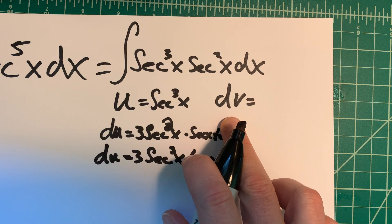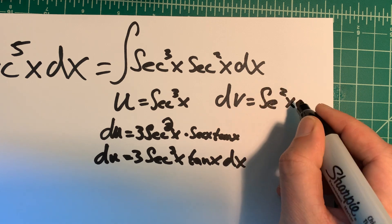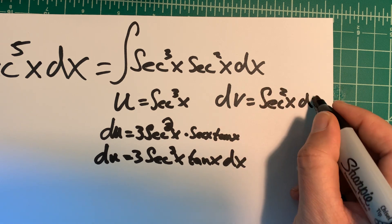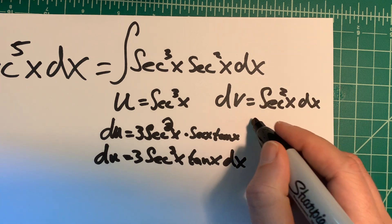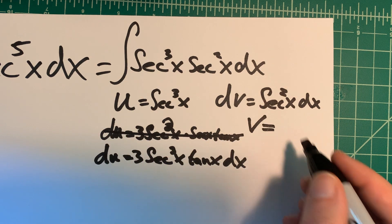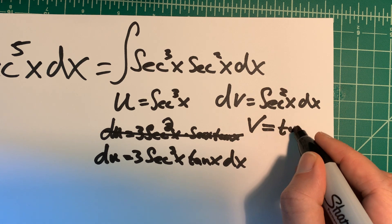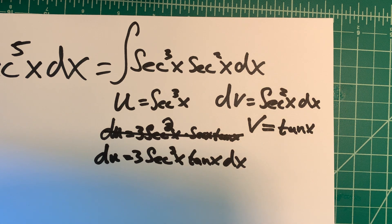I think that's kind of interesting that the derivative of secant cubed has secant cubed in it. It's kind of an interesting function. Now what about dv? What am I going to pick? I have to pick the other one. So that's secant squared x dx. And then my v is going to be, this needs to be the derivative of what? Tangent x. That's a normal one that we know.